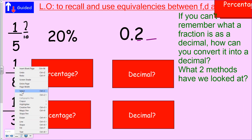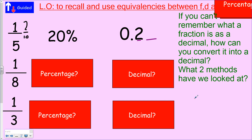One eighth is slightly different. Another method we've used is the bus stop method. You can divide: 1 divided by 8. How many eights go into 1? Zero — put your decimal in, carry the one across, add your placeholder. How many eights go into 10? One, carry across the two. How many eights go into 20? Two, with four left over.